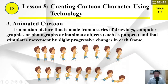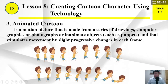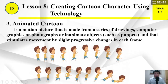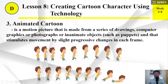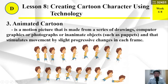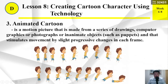Number 3: Animated cartoon. An animated cartoon is a motion picture that is made from a series of drawings, computer graphics, or photographs, or inanimate objects such as puppets, and that simulates movement by slight progressive changes in each frame.